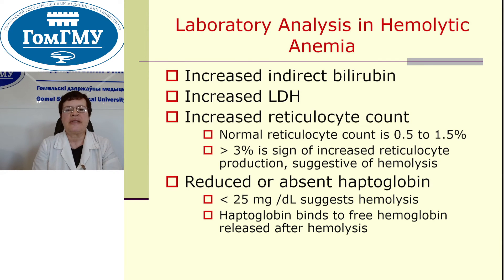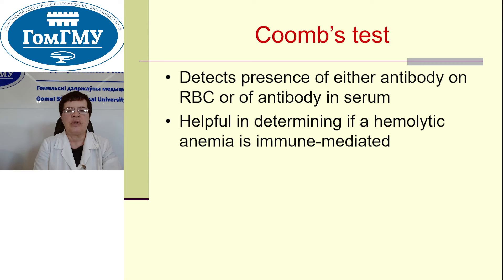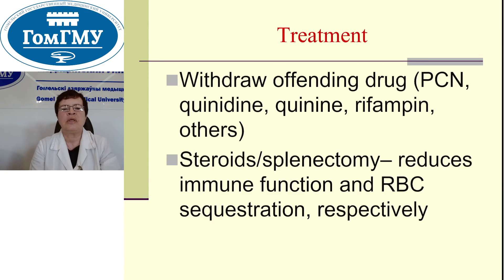Laboratory analysis of hemolytic anemia: increased indirect bilirubin, increased lactate dehydrogenase, increased reticulocyte count, and reduced or absent haptoglobin. Coombs test detects the presence of antibody on red blood cells or antibody in serum, and is helpful in determining if a hemolytic anemia is immune-mediated. Treatment: withdrawal of offending drugs, steroids or splenectomy to reduce immune function and red blood cell sequestration respectively.